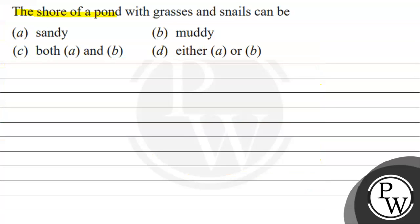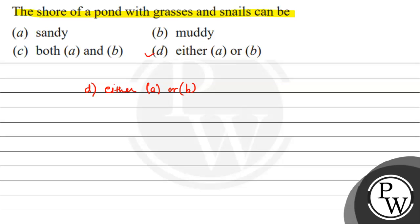Now the question: the shore of a pond with grasses and snails can be — option A: sandy, option B: muddy, option C: both A and B, option D: either A or B. As clearly written in the passage, the shore of a pond with grasses and snails can be muddy or sandy, so the answer is option D, which is either A or B.